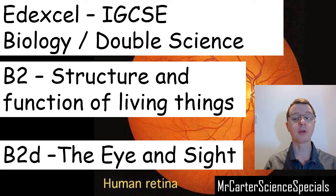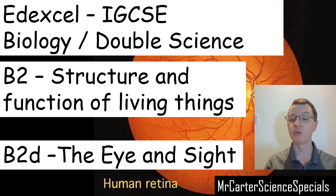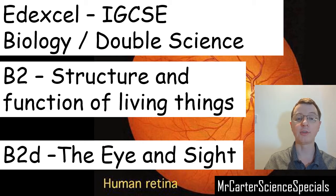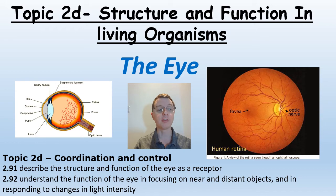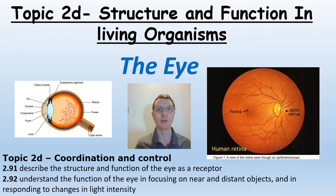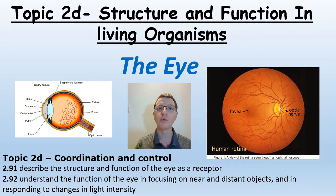Hello and welcome to another Mr Castle science special. Today we're going to be looking at the eye and sight. This lesson is going to come in three parts. We're going to look firstly at the eye and the structure of the eye, secondly we're going to look at accommodation or focusing, and thirdly we're going to look at how we can use glasses and lenses to correct certain problems with vision.